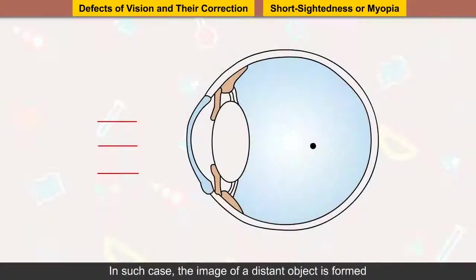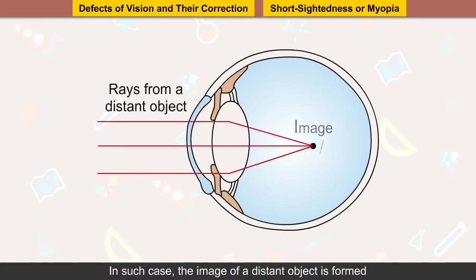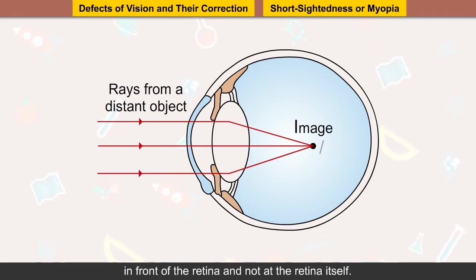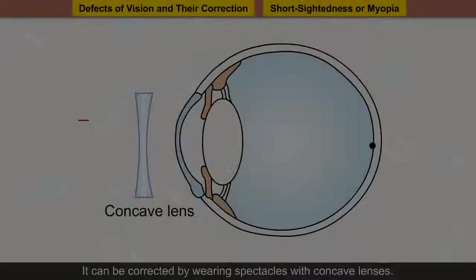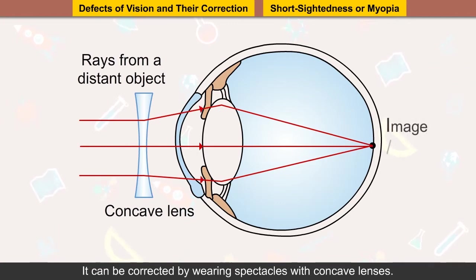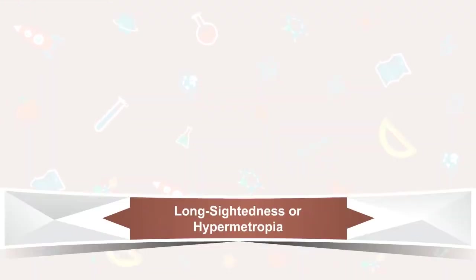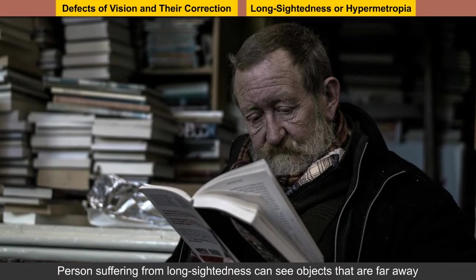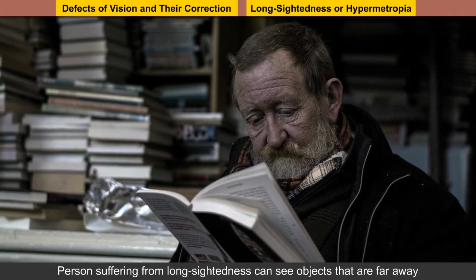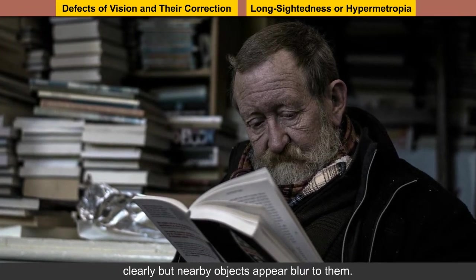In such cases the image of a distant object is formed in front of the retina, not at the retina itself. This defect is called myopia and can be corrected by wearing spectacles with concave lenses. Long-sightedness or hypermetropia: a person suffering from long-sightedness can see objects that are far away clearly, but nearby objects appear blurred.